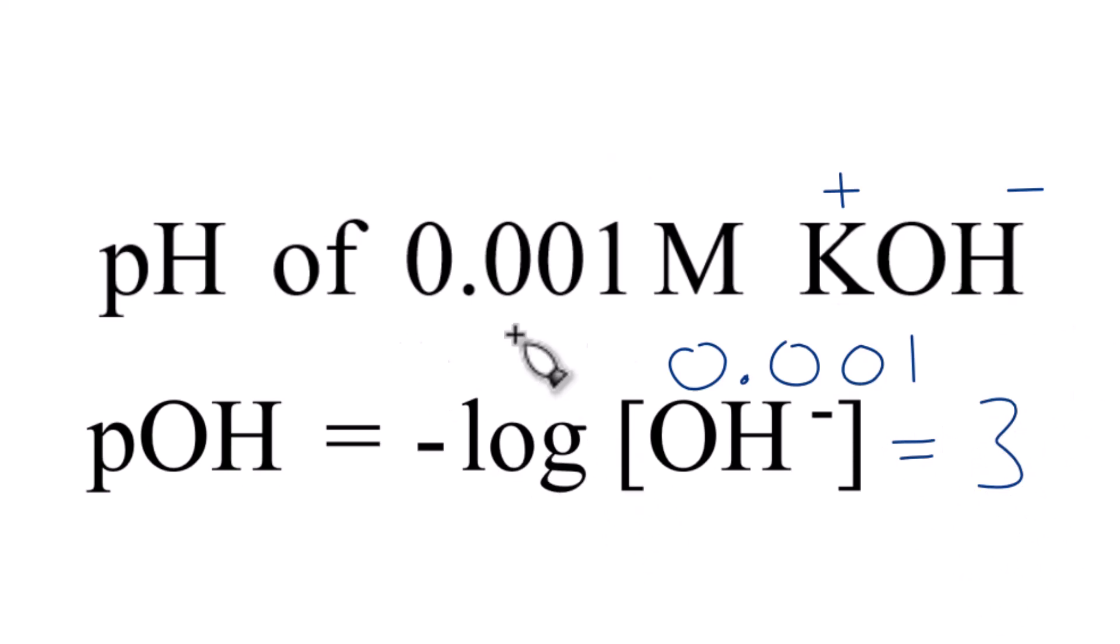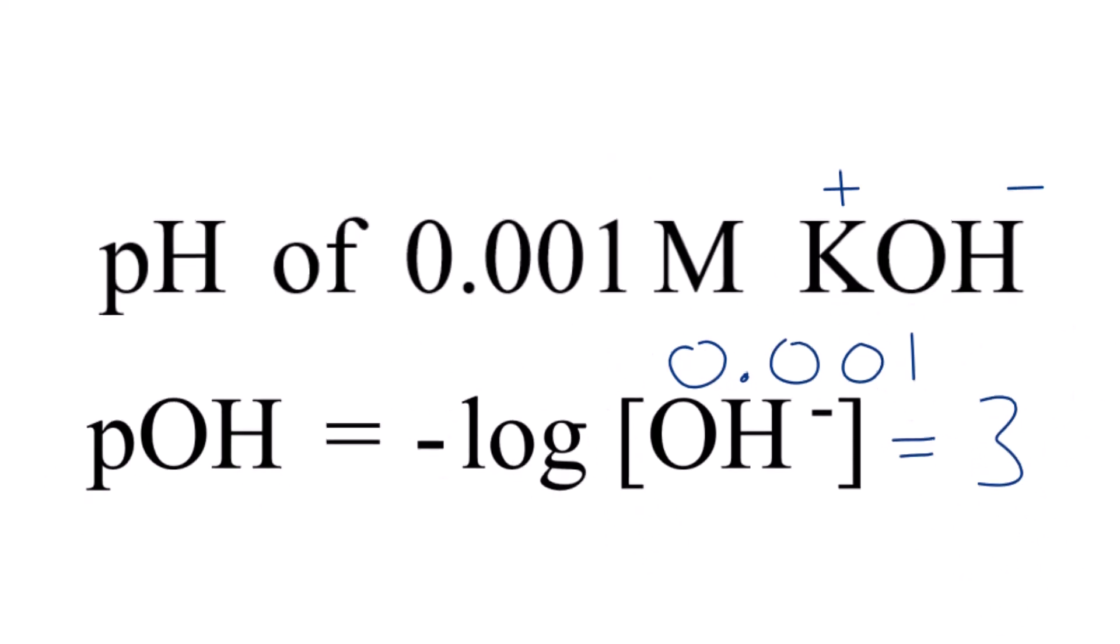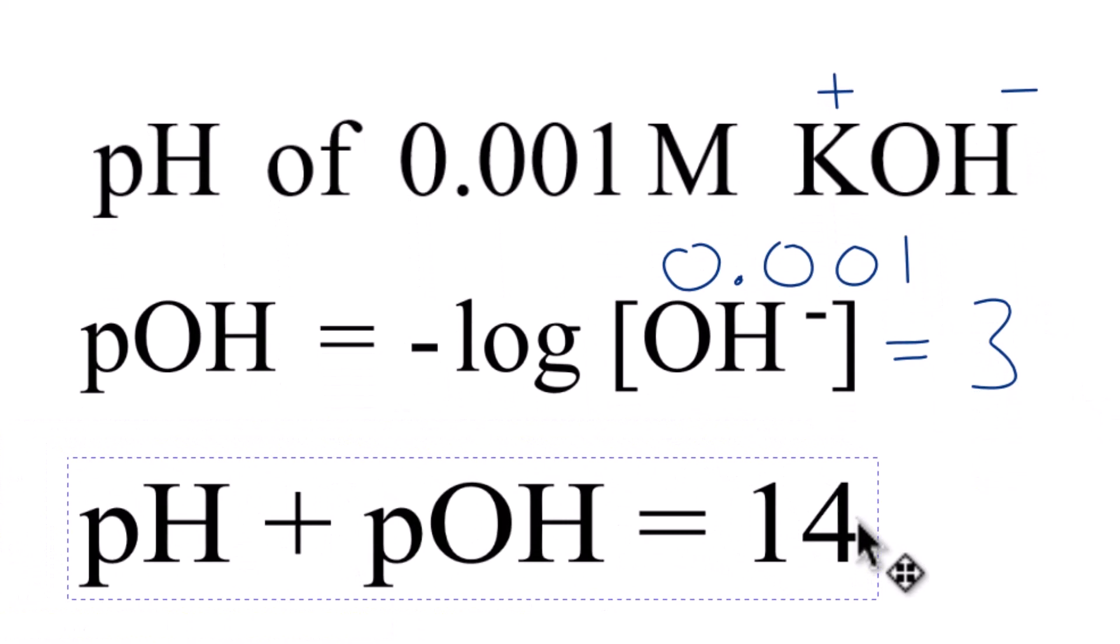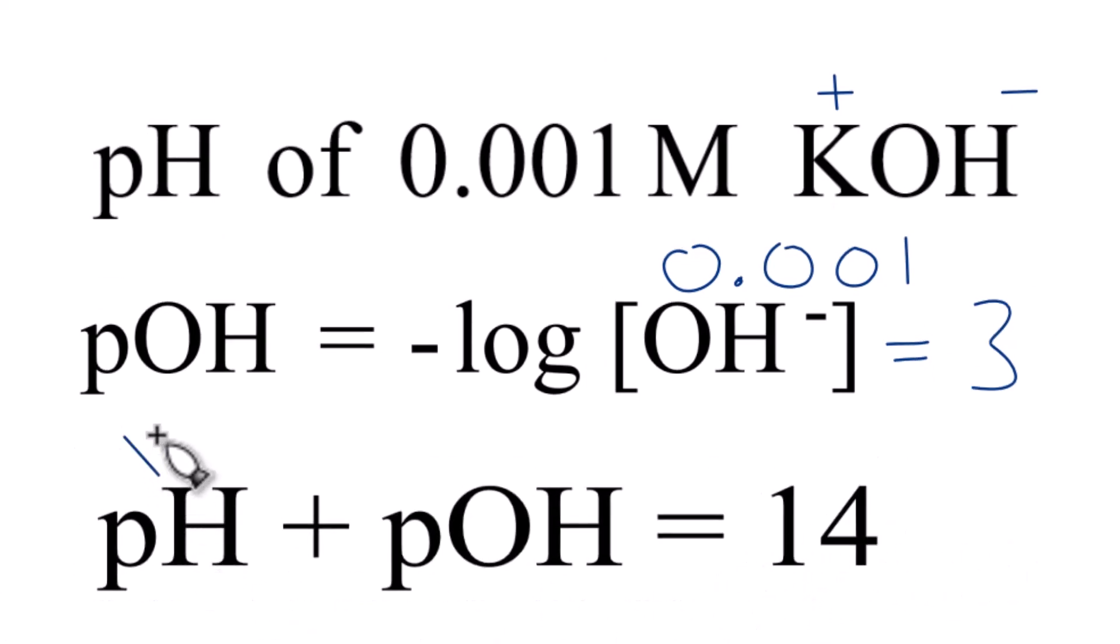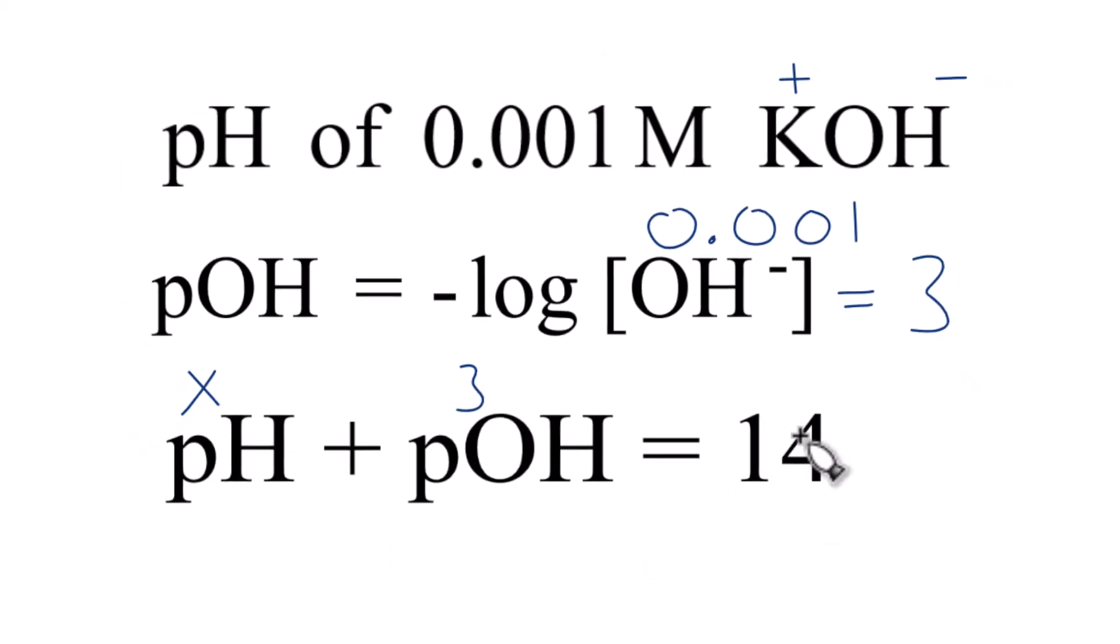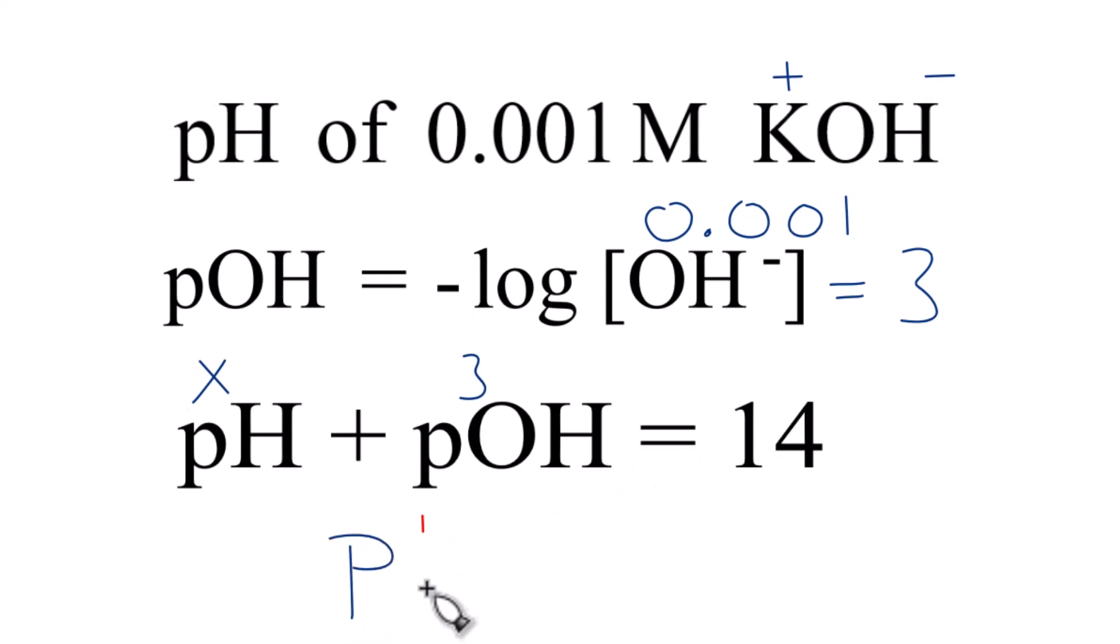Now we can find the pH for our potassium hydroxide solution. We'll use this equation right here. So pH, we don't know what that is. That's what we're trying to find. We just found pOH. That's three. So some number plus three equals 14. Eleven plus three, that equals 14. So the pH of our 0.001 molar solution of KOH is 11.